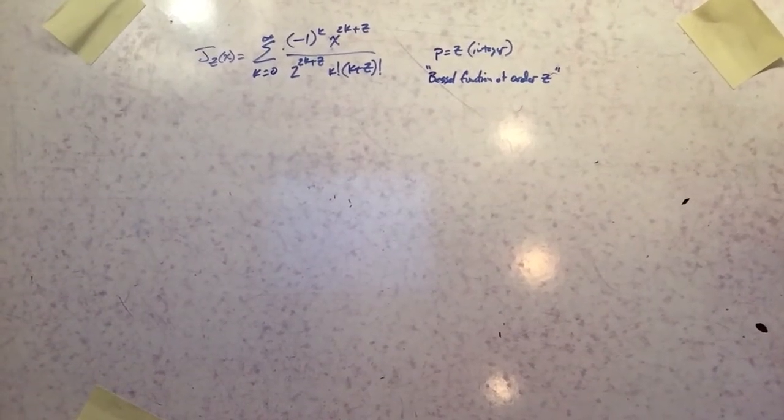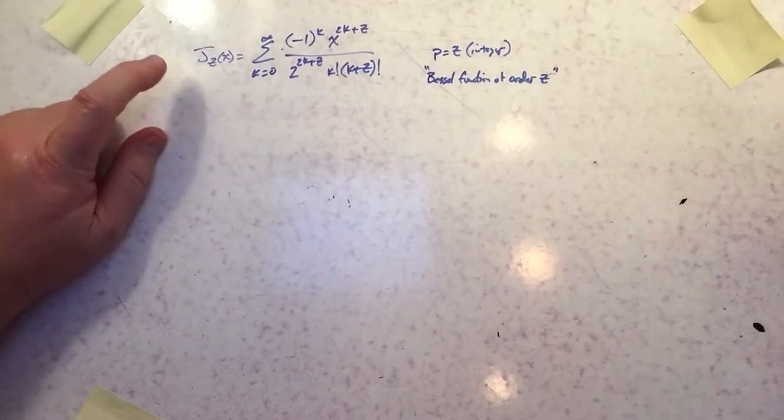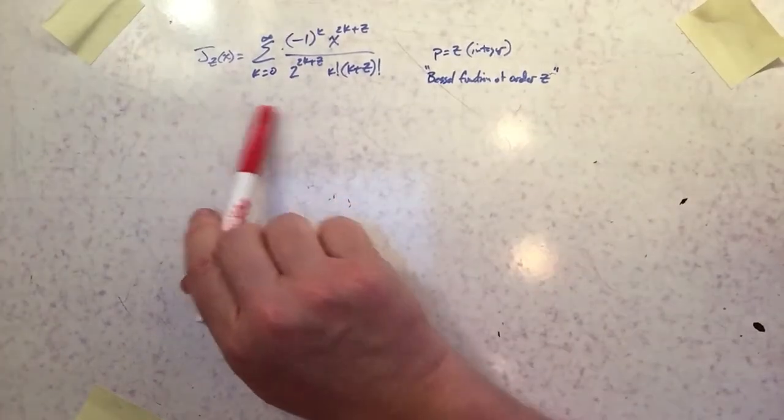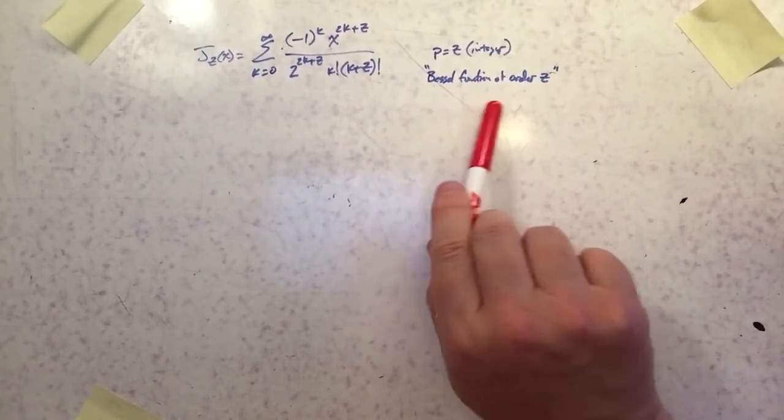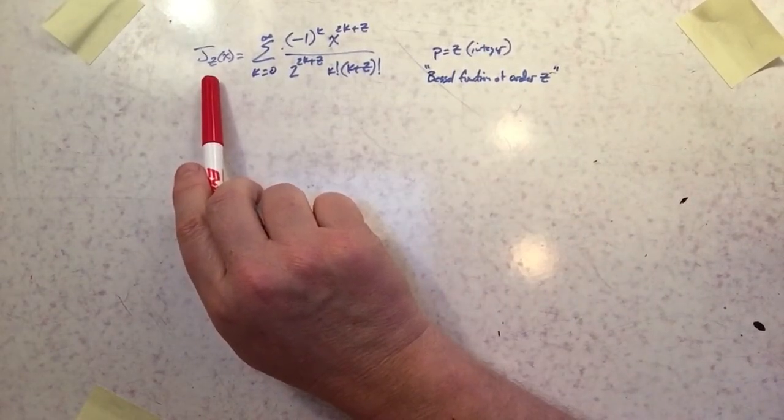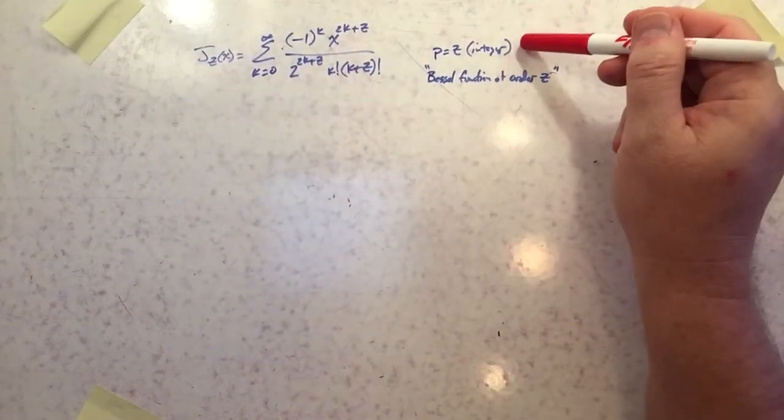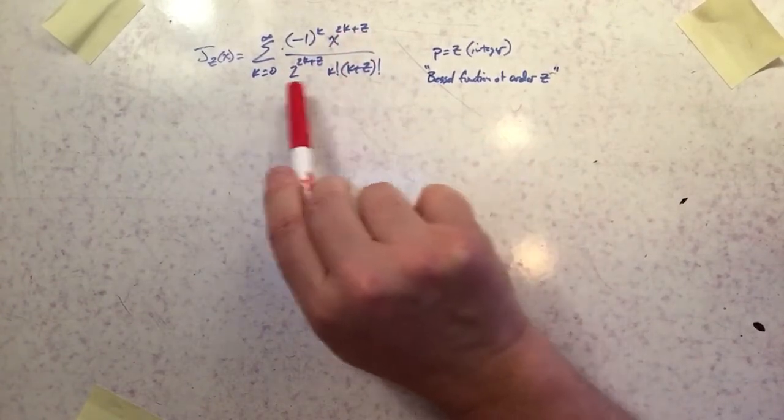The second video tonight is going to feature some solutions to the Bessel function. So again, this is the Bessel function of the first kind. They also call this the Bessel function of order z. Remember z is really the value for p, we're restricting it here to an integer. So p is an integer and p takes on that role of z.